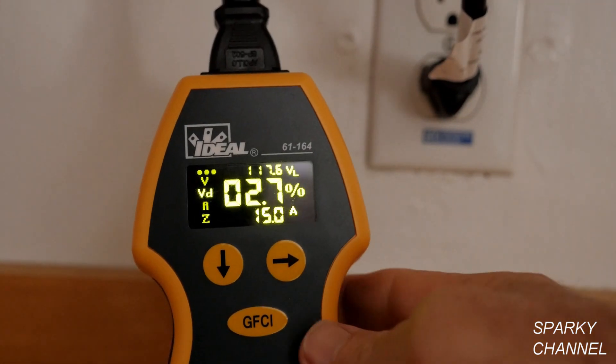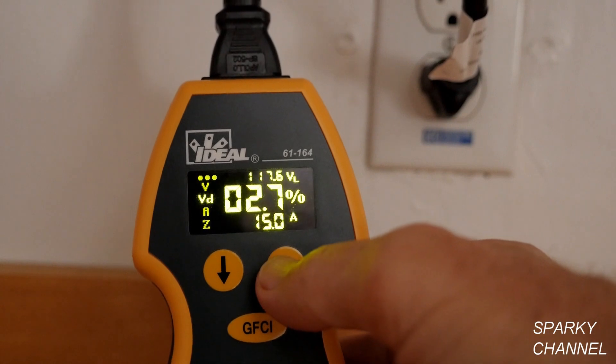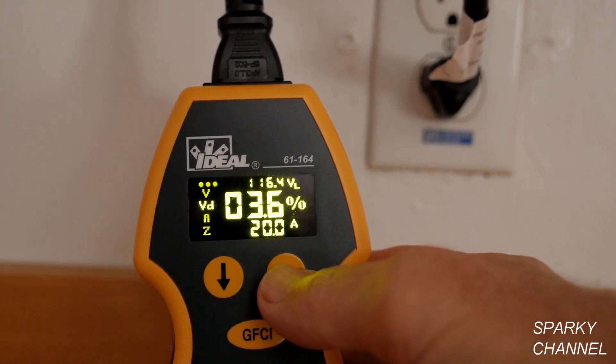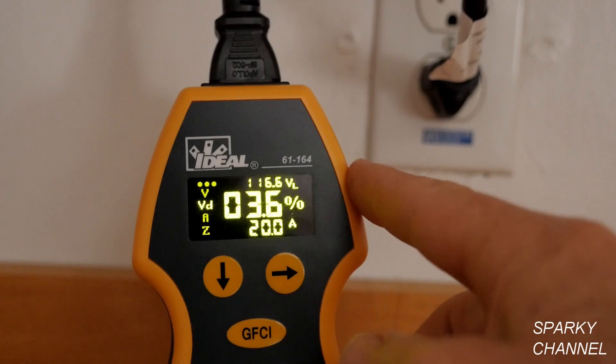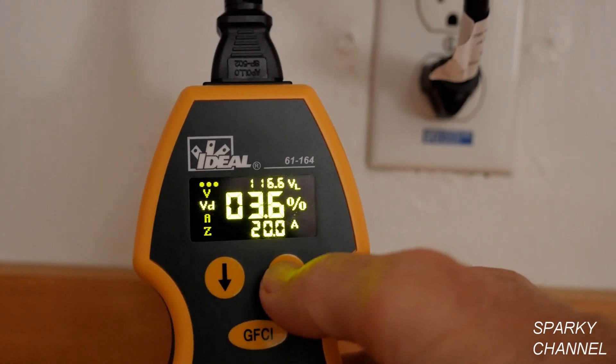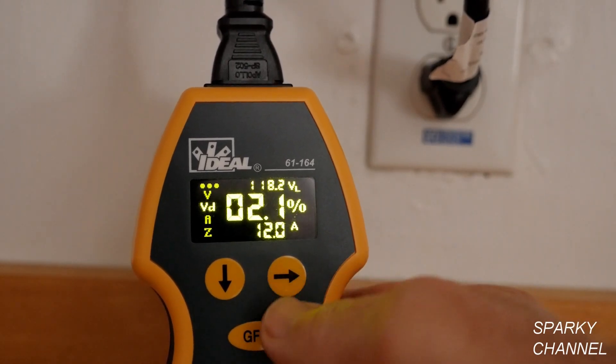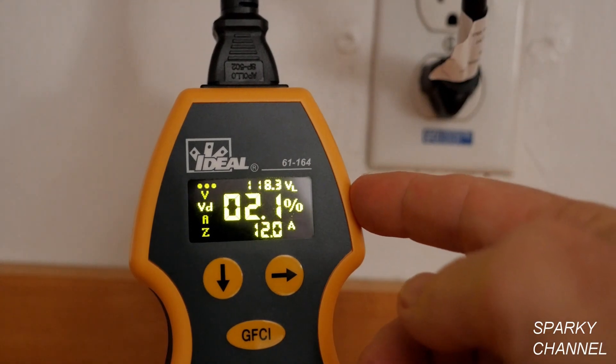When we change the amperage of the load to a 20 amp load, that increases the voltage drop. If you decrease the amperage of the load, that decreases the voltage drop.